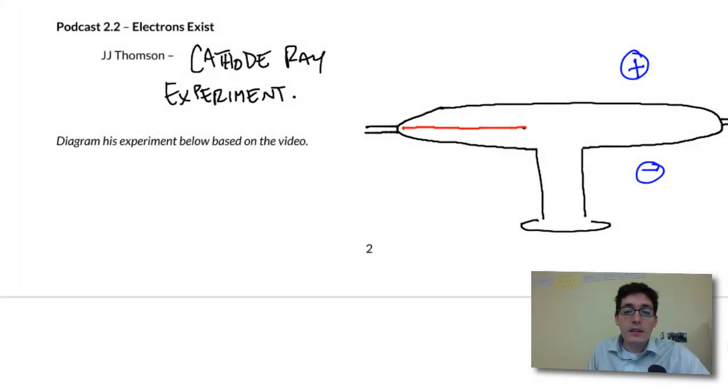So as that beam traveled across the cathode ray, what he noticed is that it would deflect upwards toward that positive portion of the magnet.